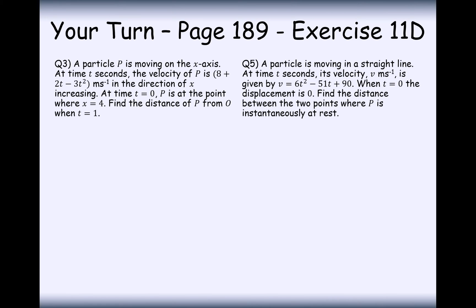Your turn to have a go at these two questions. Pause the video and have a go. Well done for having a go. A particle P is moving on the x-axis. At time t seconds, the velocity of P is 8 plus 2t minus 3t squared meters per second in the direction of x increasing. At time t equals 0, P is at the point where x equals 4. Find the distance from P from O when t equals 1. We've got velocity here that equals 8 plus 2t minus 3t squared. To work out displacement, we have to integrate 8 plus 2t minus 3t squared dt. This is therefore going to equal 8t plus t squared minus t cubed plus c.